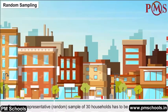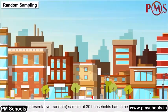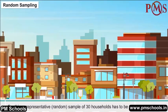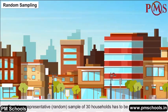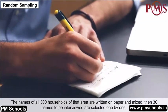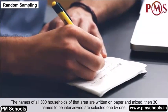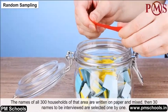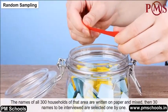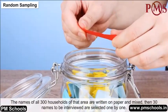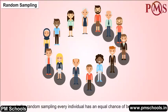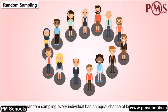For this, a representative random sample of 30 households has to be taken and studied. The names of all 300 households of that area are written on paper and mixed. Then, 30 names to be interviewed are selected one by one. In random sampling, every individual has an equal chance of being selected.